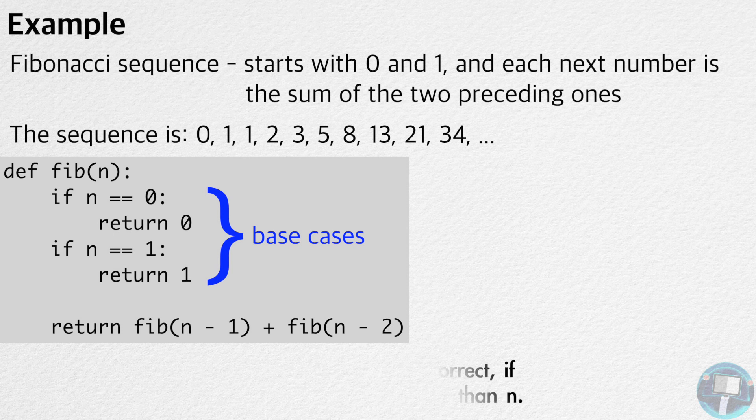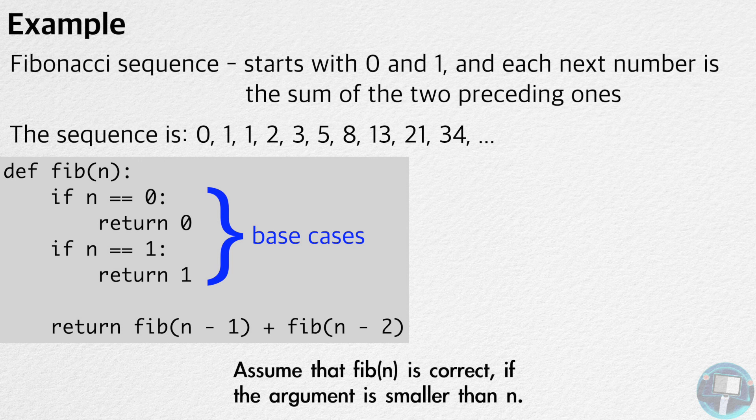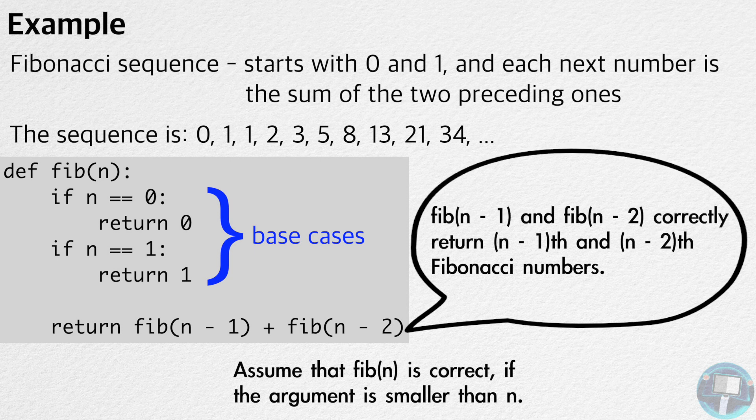Now, we can make the assumption that the function Fib is correct if the argument is smaller than n. By this assumption, Fib of n minus 1 and Fib of n minus 2 are correct. Therefore, Fib of n correctly returns the sum of the two preceding Fibonacci numbers.